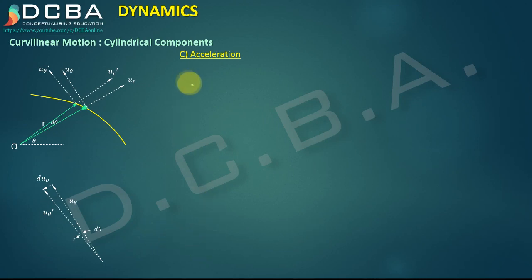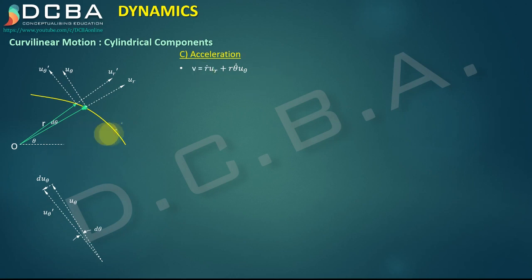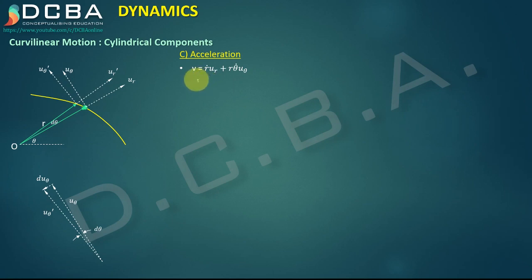After velocity, let us derive acceleration. We have v = ṙ·ur + r·θ̇·uθ. To get acceleration, we differentiate this equation. All components are functions of time, so we must apply the product rule, and there are three terms to handle.